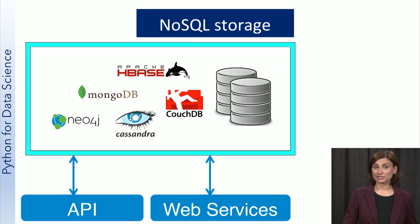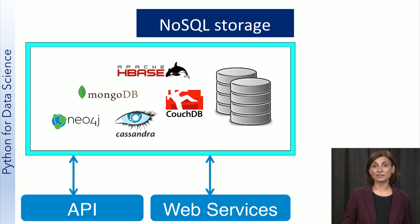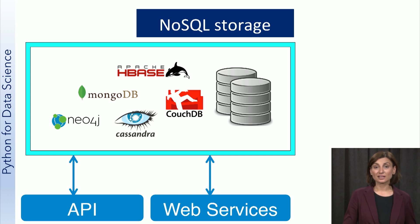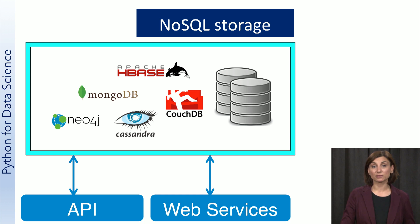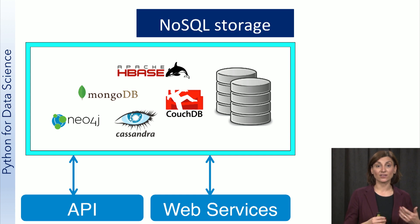NoSQL storage systems are increasingly used to manage a variety of data types. These data stores are databases that do not represent data in a table format with columns or rows as with conventional relational databases. Examples of these data stores include Cassandra, MongoDB, and HBase. NoSQL data stores provide APIs to allow users to access the data. These APIs can be used directly or in an application that needs to access the data, like a Python script. Additionally, most NoSQL systems provide data access via a web interface such as REST.